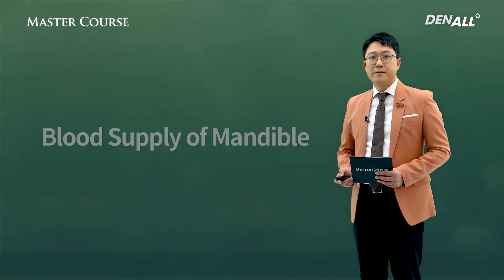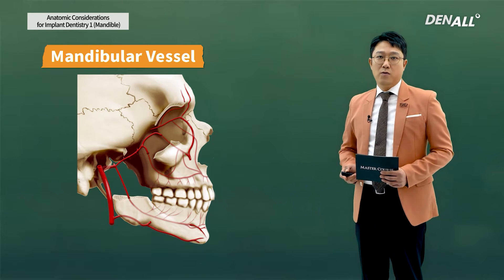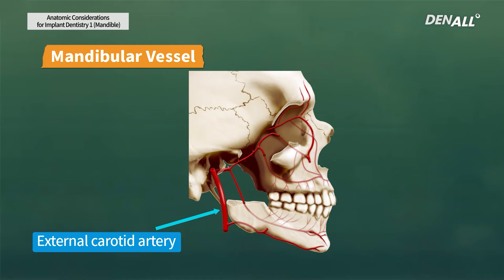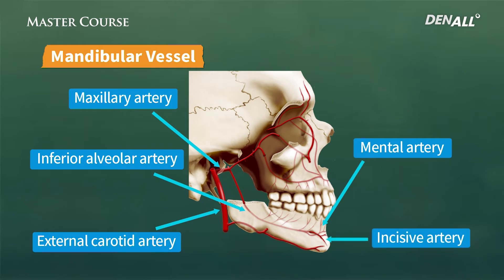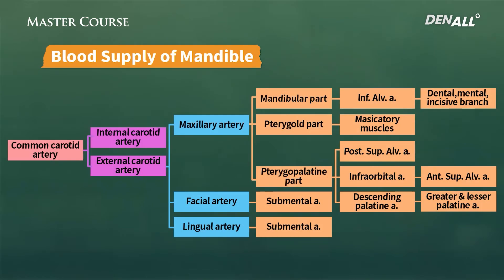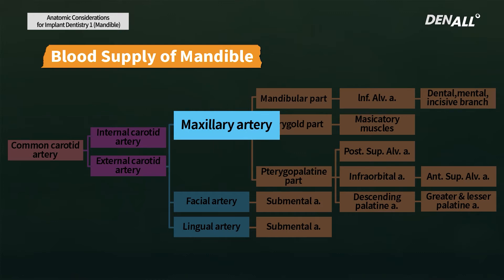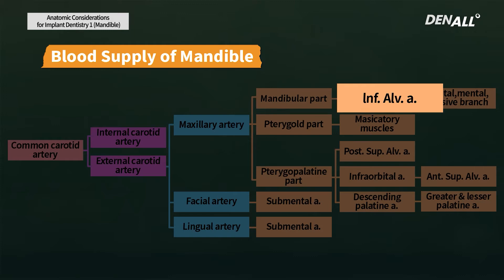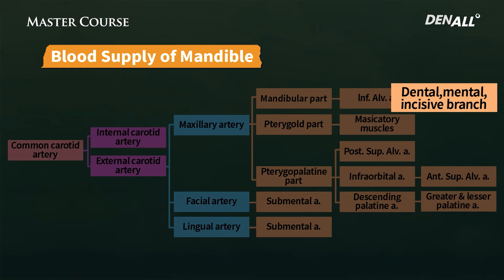Next, blood supply of the mandible. Blood supply comes from the heart, so jaw bone blood is supplied from below. From the external carotid artery branches the maxillary artery, from there branches the inferior alveolar artery, which goes through the mandibular foramen and into the inferior alveolar canal. From the mental foramen, the mental artery comes out, and the incisive artery runs in the anterior region to supply blood. From the mandibular part, the inferior alveolar artery comes out, from which the mental and incisive arteries are branched.